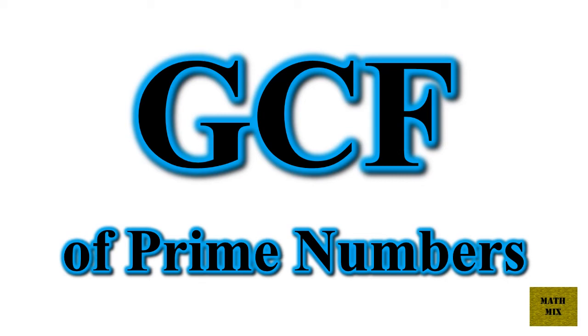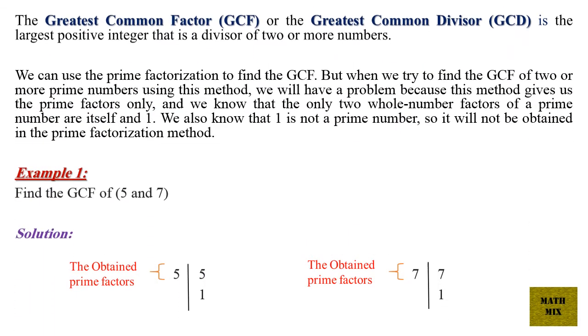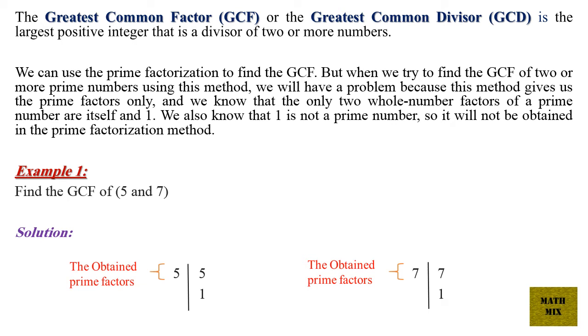What is the GCF of prime numbers? The greatest common factor (GCF), or the greatest common divisor (GCD), is the largest positive integer that is a divisor of 2 or more numbers.